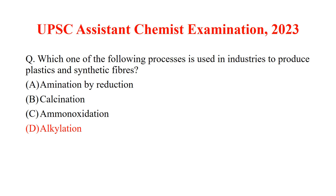Which one of the following processes is used in industries to produce plastics and synthetic fibers? I think the first three options are not the answer, because by ammono-oxidation we produce R-CN compounds. I think the answer is alkylation, since alkylation can initiate a polymerization reaction. So most probably the answer is option D.